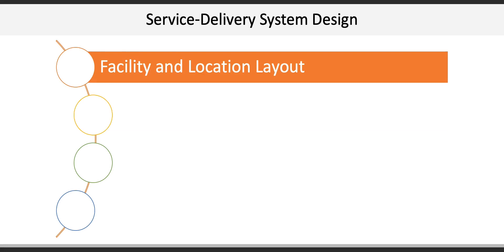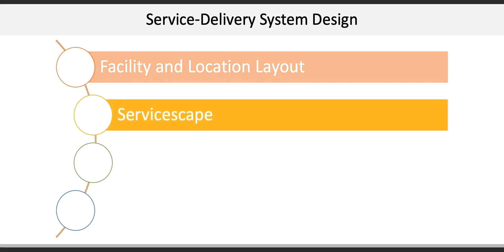Second is the service scape, which includes all the physical evidence a customer might use to form an impression. The service scape also provides the behavioral setting where the service encounter takes place. For example, Starbucks makes great efforts into creating an appropriate service scape for customers, that includes color tones, comfort level of chairs, the type of music, and even a fireplace.